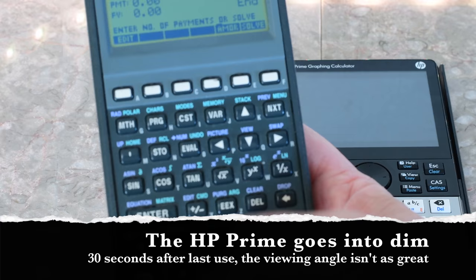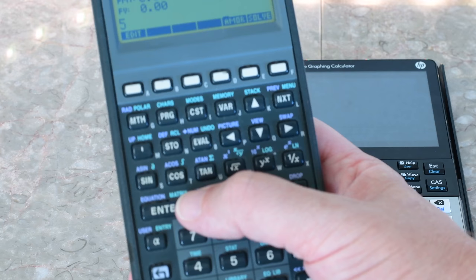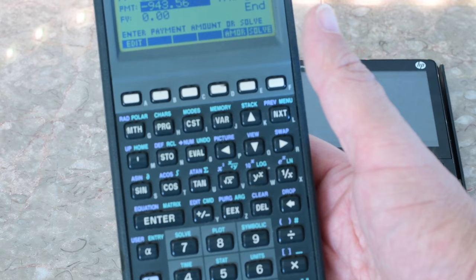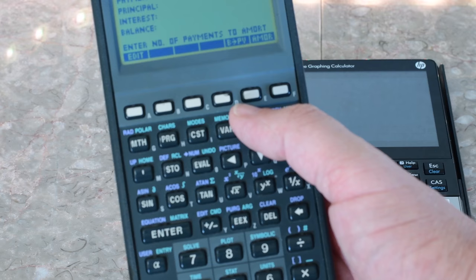We'll do the same kind of thing, 60 months, 5%, 50,000 payment. And then we'll solve for payment. So you see the little, I mean, didn't take long, of course, but it did take time.